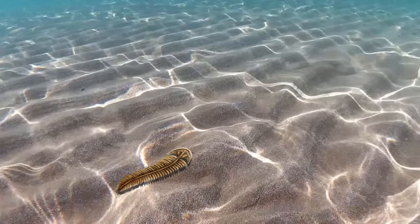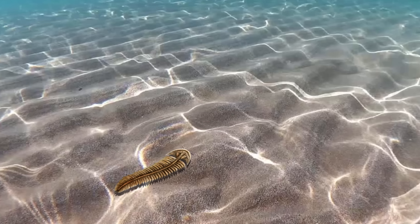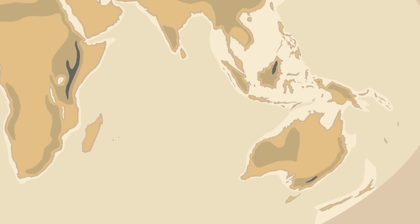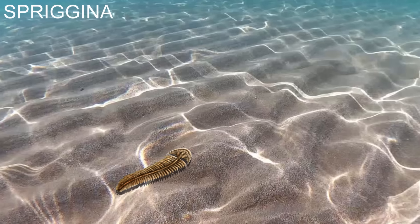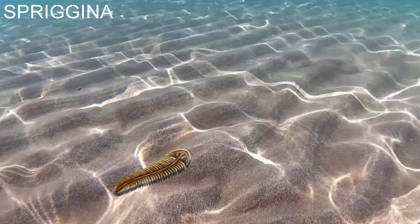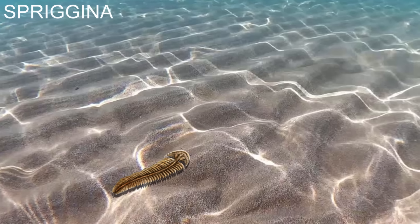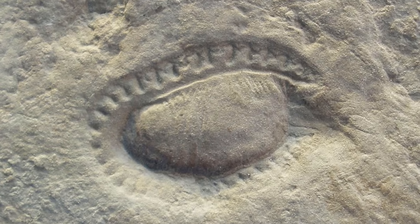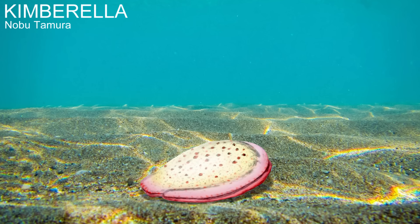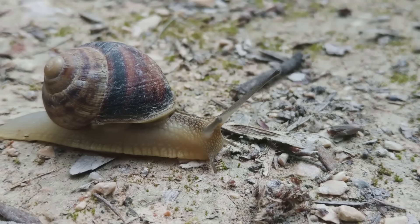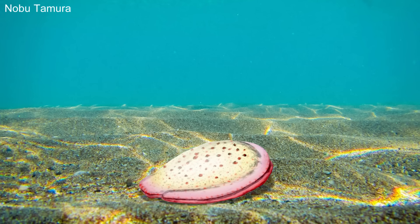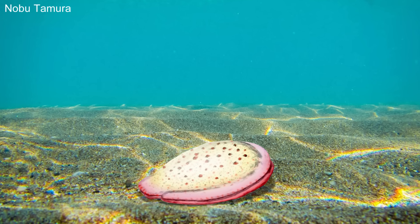The Ediacaran wasn't just strange fractal organisms — bilatrians do start to appear in the fossil record towards the end of the period. In the rocks of central Australia, there are preserved ecosystems dating to about 555 million years ago containing the earliest bilateral animals in the fossil record. There was one ancient animal known as Spriggina that looked a lot like a trilobite, and some scientists believe they were related to the trilobites. There was also a bilatrian named Kimberella — a small animal thought to have lived like a slug, feeding off microbial life on the seafloor. Some scientists think it may have been an incredibly primitive mollusk, but with such ancient creatures, relationships with other animals are difficult to work out.